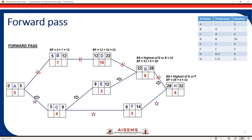Now we'll go to activity D. D is dependent on activity B. Once B finishes, we can calculate the ES and EF for activity D. Activity B finishes at day 12, so this EF acts as ES for activity D. Early start for D is day 12. Early finish: 12 plus duration 10 equals 22. So 22 will be the early finish for activity D.